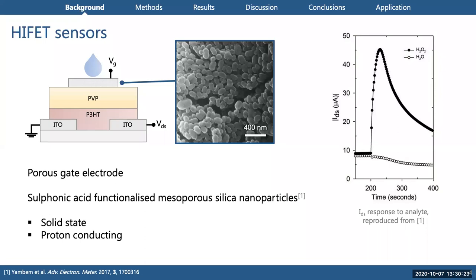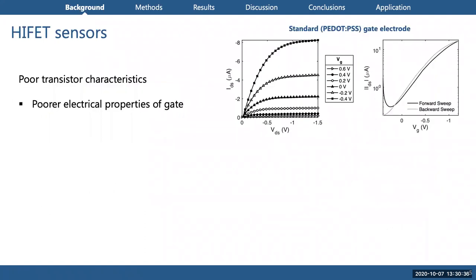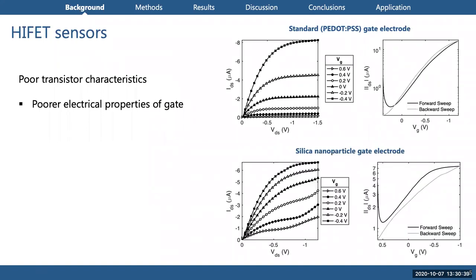This is the current modulation we observe when tested with hydrogen peroxide, which is a common analyte we use. However, the change in the gate material from the standard material to the nanoparticles does severely affect the transistor performance. When we compare the output and transfer characteristics of the standard gate with the silicon nanoparticle gate, we can clearly see quite a difference there.